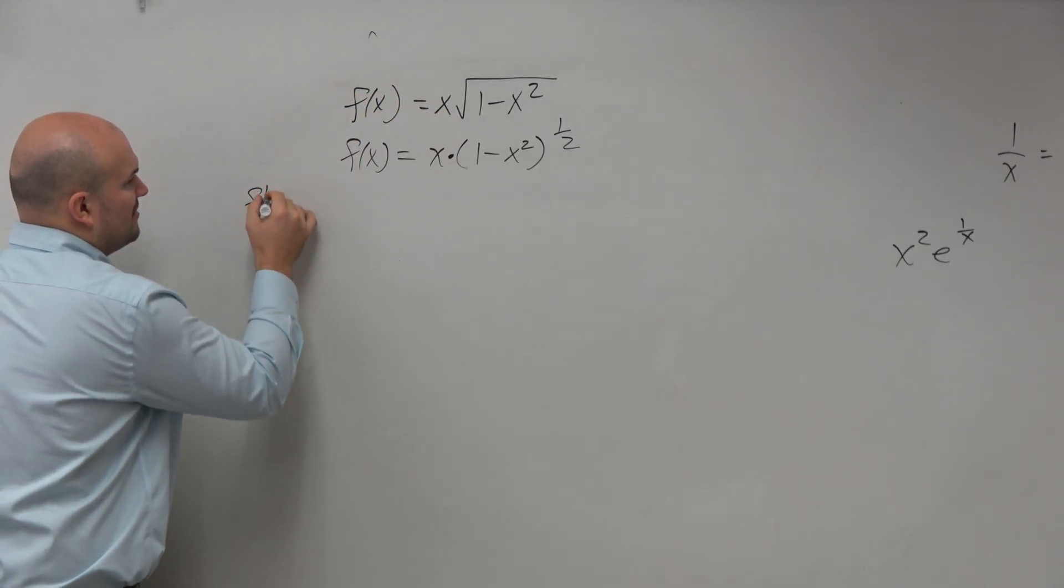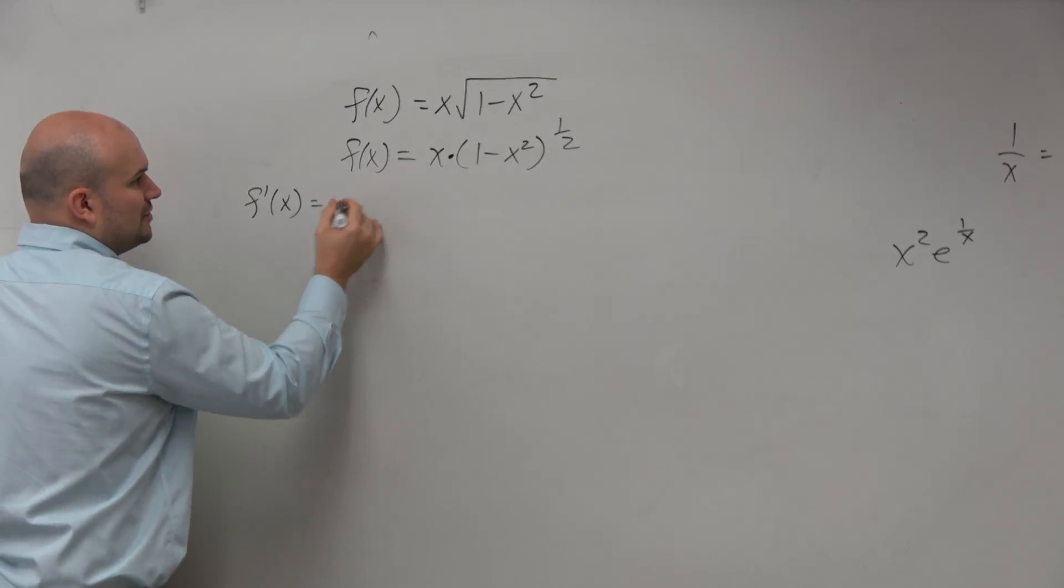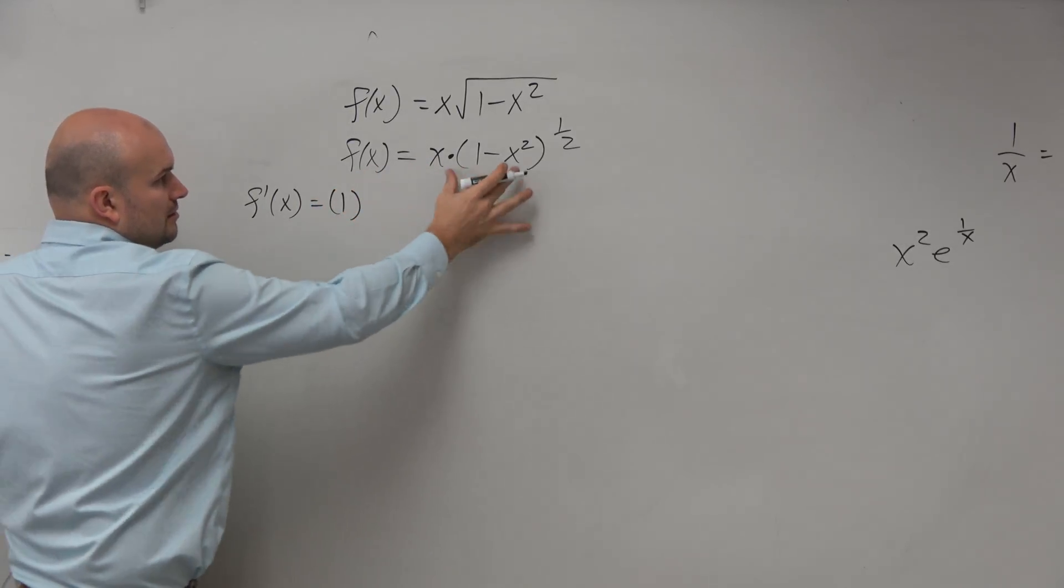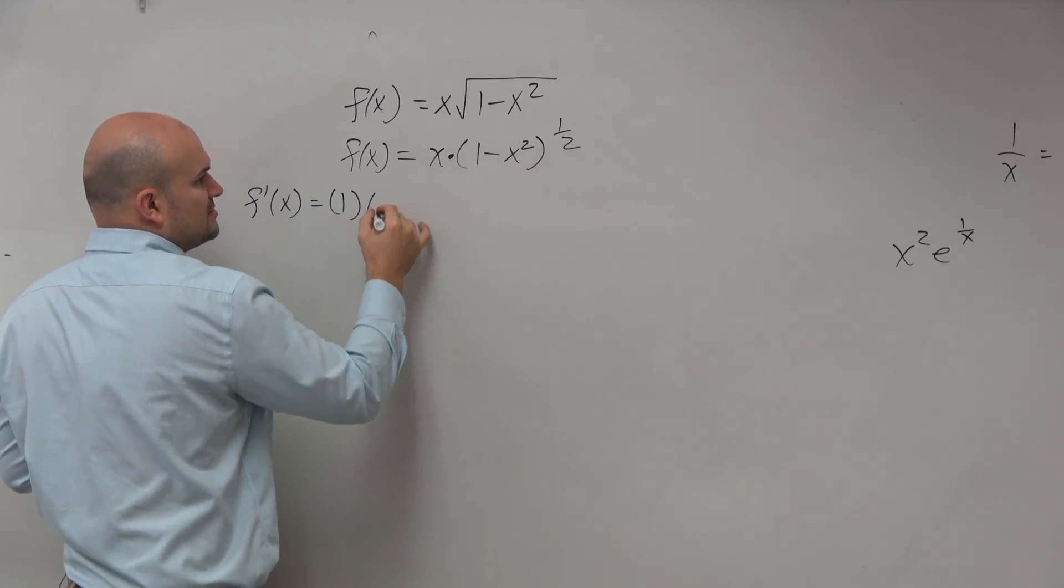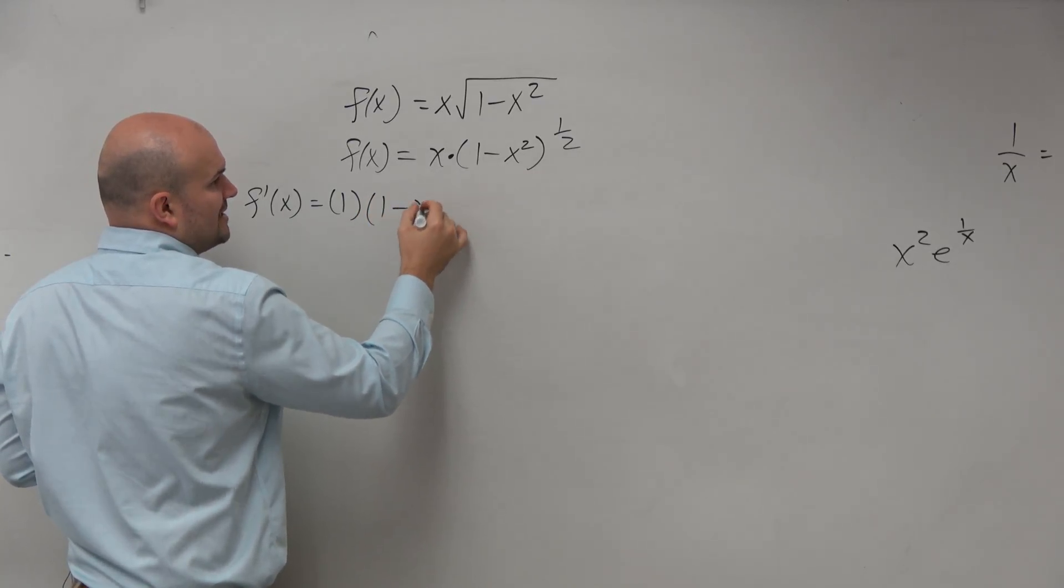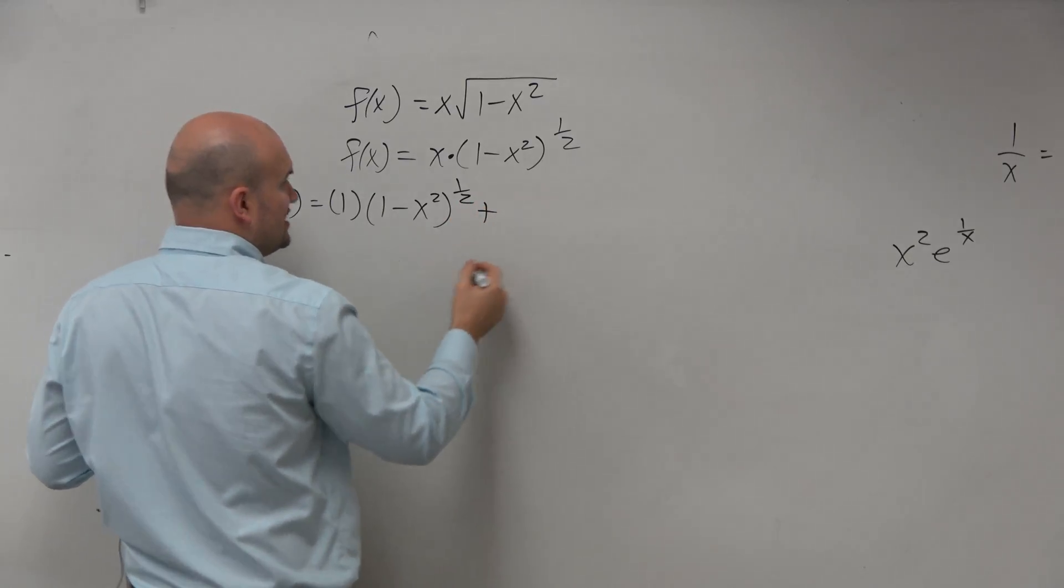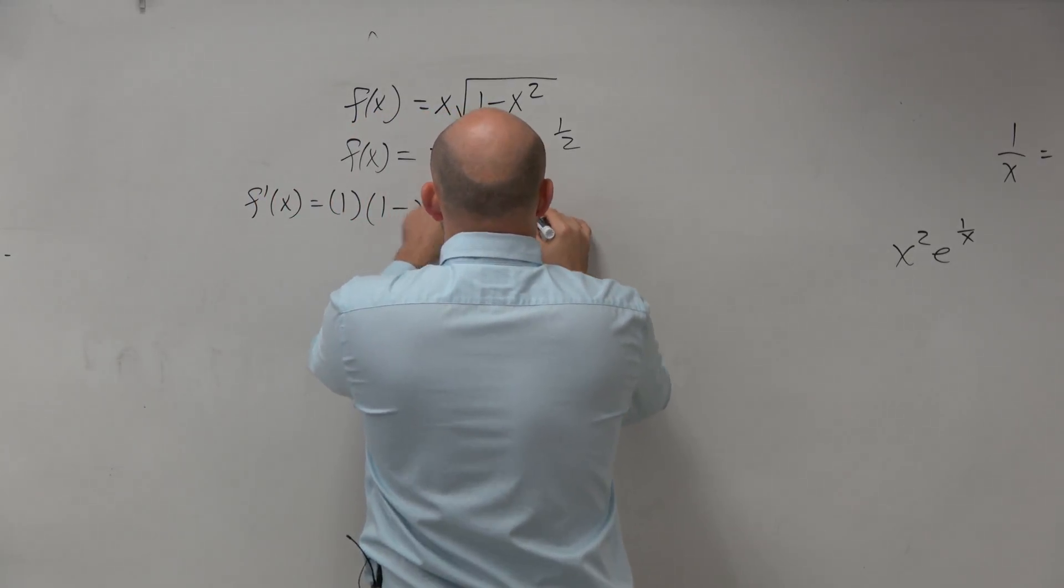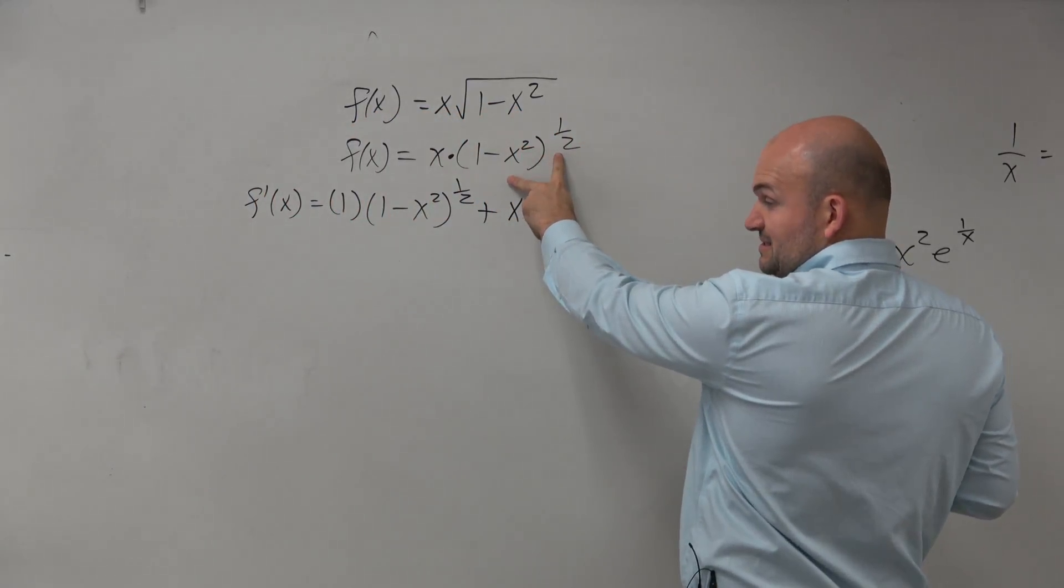So if I'm going to do f prime of x using the product rule, that's going to be the derivative of x, which is 1, times the second term, so that would be our second expression, 1 minus x squared raised to the 1 half, plus my first term times the derivative of my second.